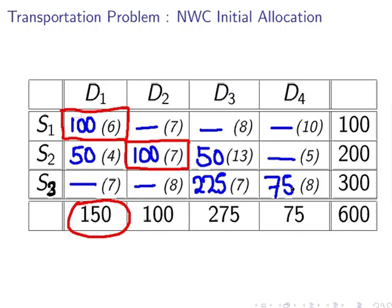What we're left with is that 225 must come from S3, and the remaining 75 for D4 must come from S3 also. After a while, once you've gone through it a bit, the answers just present themselves. This is our northwest corner initial allocation. Is it an optimal solution, the cheapest possible way to ship all the items? In most cases it is not, so the point of the transportation problem is to rearrange what we have here so as to improve the costs.